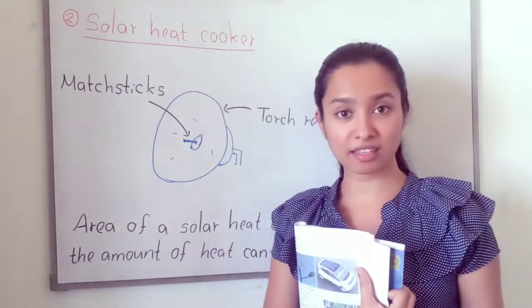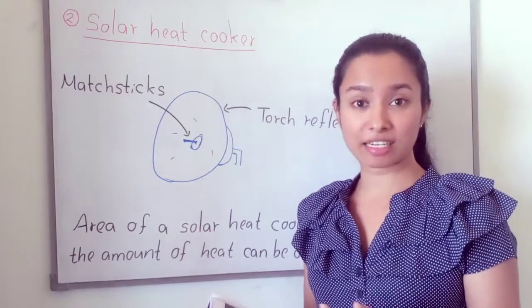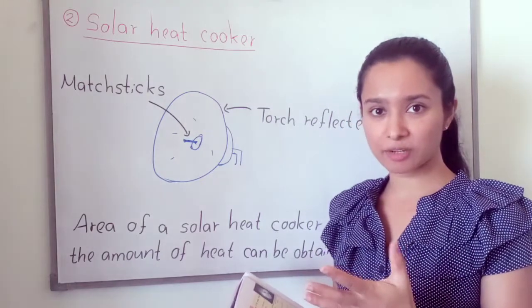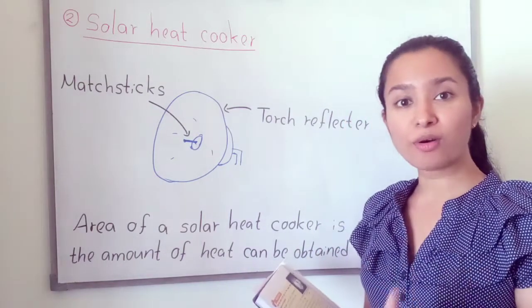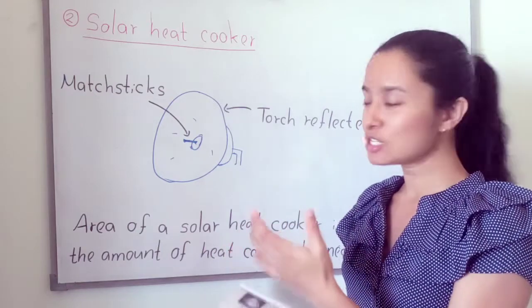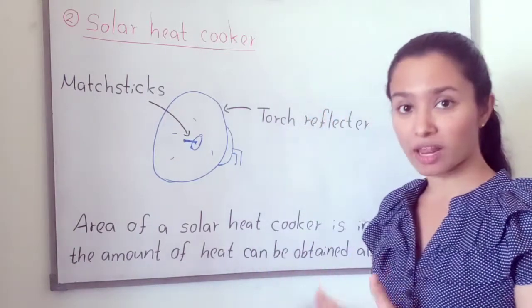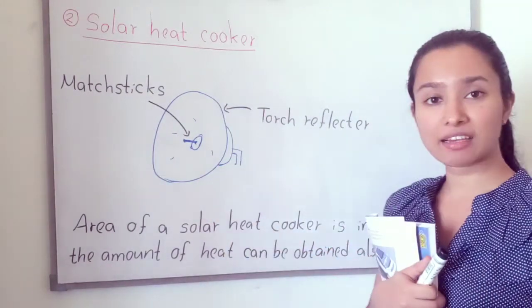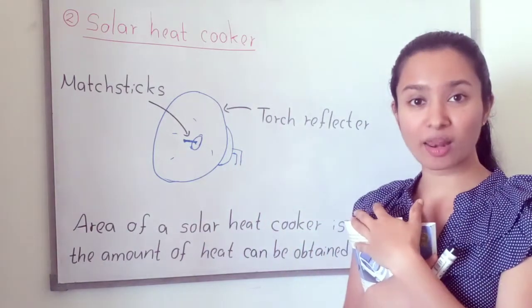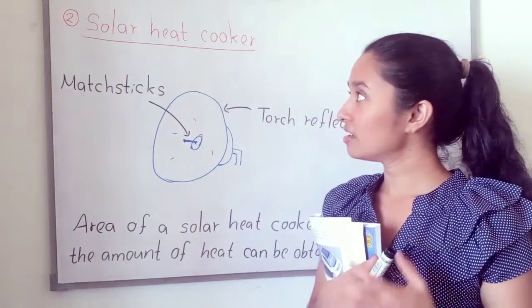After doing the practical, you can observe that when we increase the size of the torch reflector, it decreases the time to light the mastic. That means when we increase the size, the amount of heat obtained also increases. The same thing happens with a solar heat cooker — when we increase the area, we can obtain more heat.